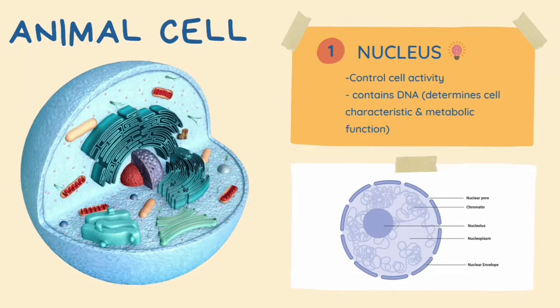Now let's take a closer look at the organelles within an animal cell. First of all, we have the nucleus. The nucleus is known as the largest component inside a cell. It is also known as the brain of the cell.